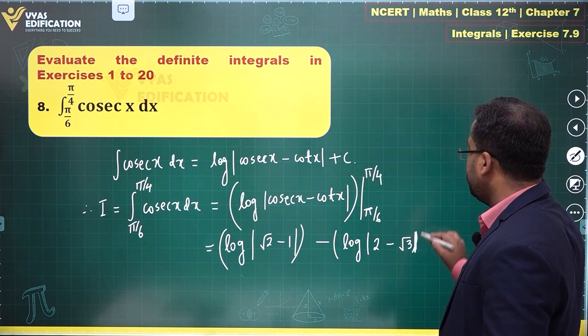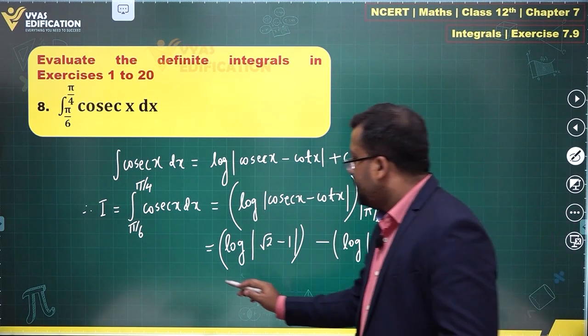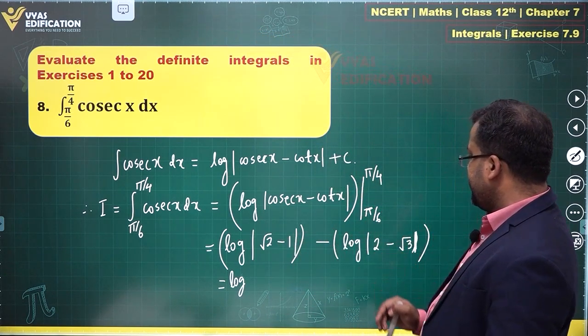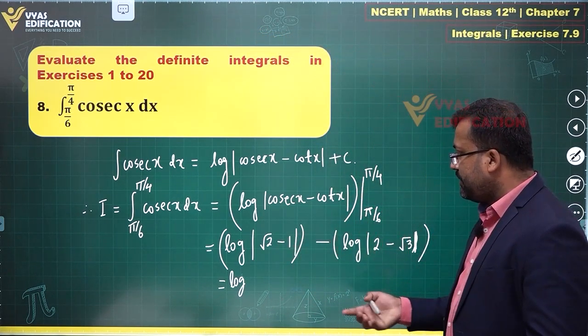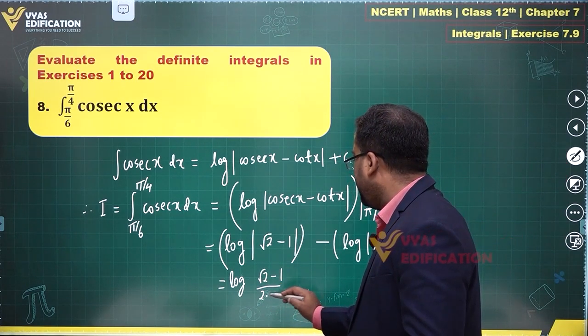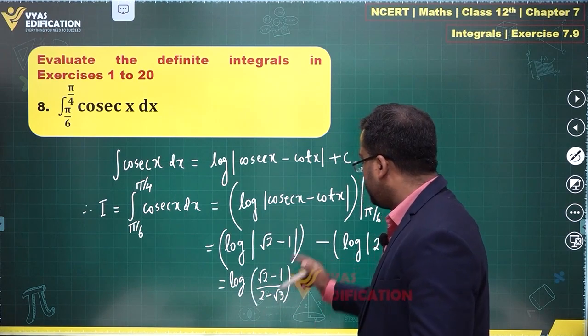This is what you get. There's a bracket, so this becomes: log this minus this, log this minus log this will be log this upon this, √2 minus 1 upon 2 minus √3.